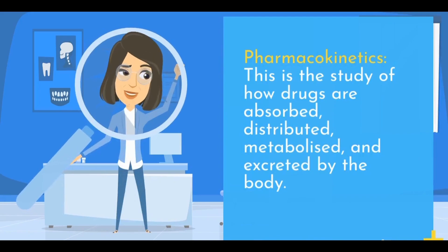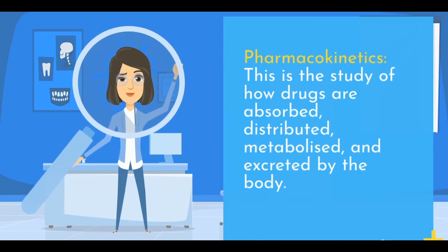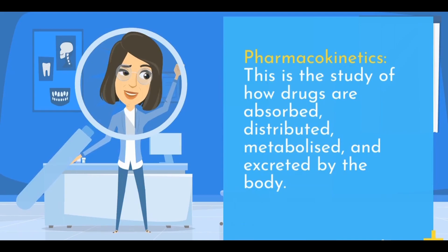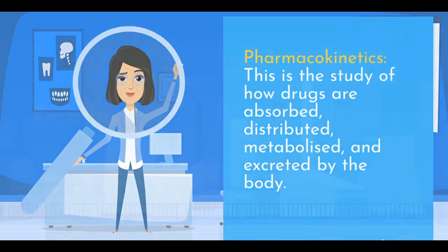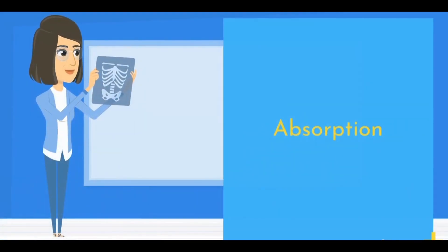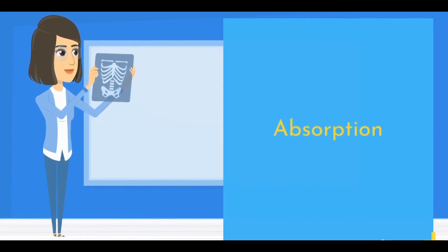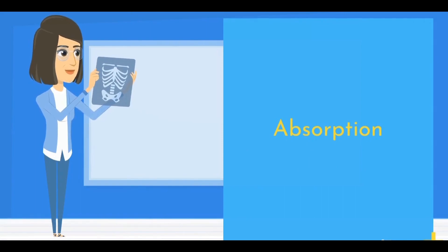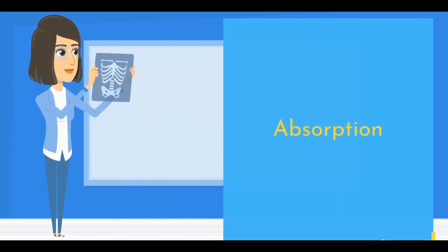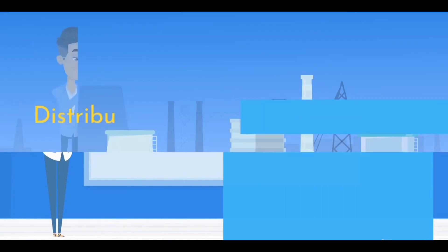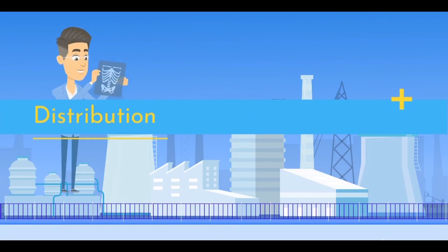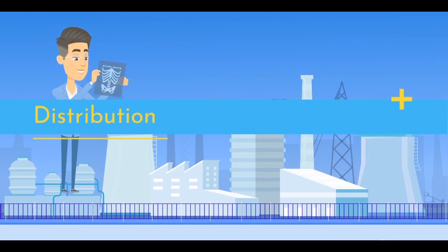Let's start with pharmacokinetics — this is the study of how drugs are absorbed, distributed, metabolized, and excreted by the body. Absorption is the process by which drugs enter the bloodstream from the site of drug administration; the rate and efficiency depend on the route of administration. Distribution is the process by which a drug spreads or moves from the bloodstream to different parts of the body's tissues and organs.